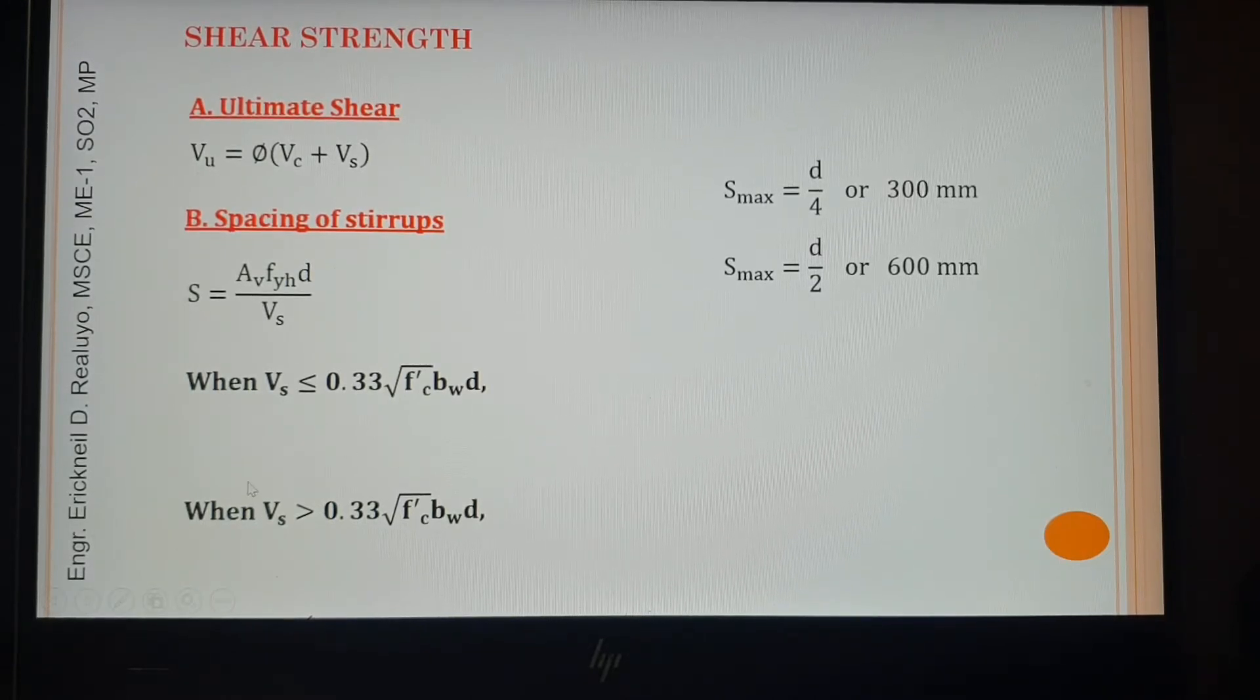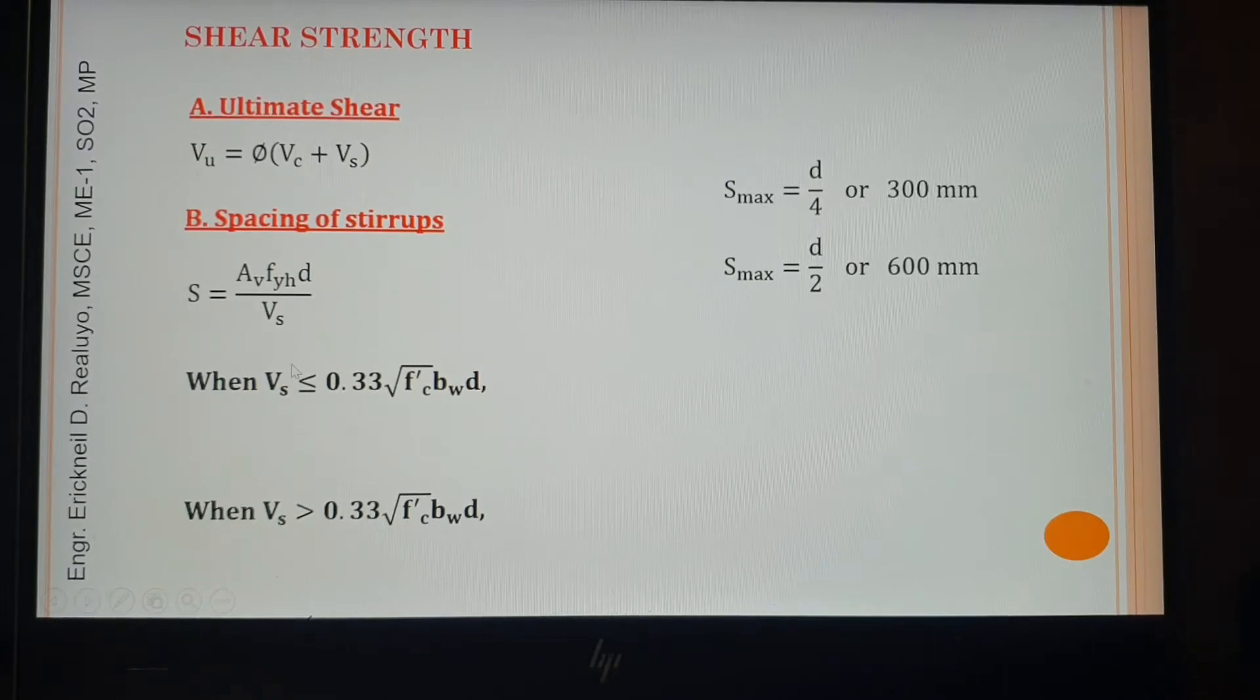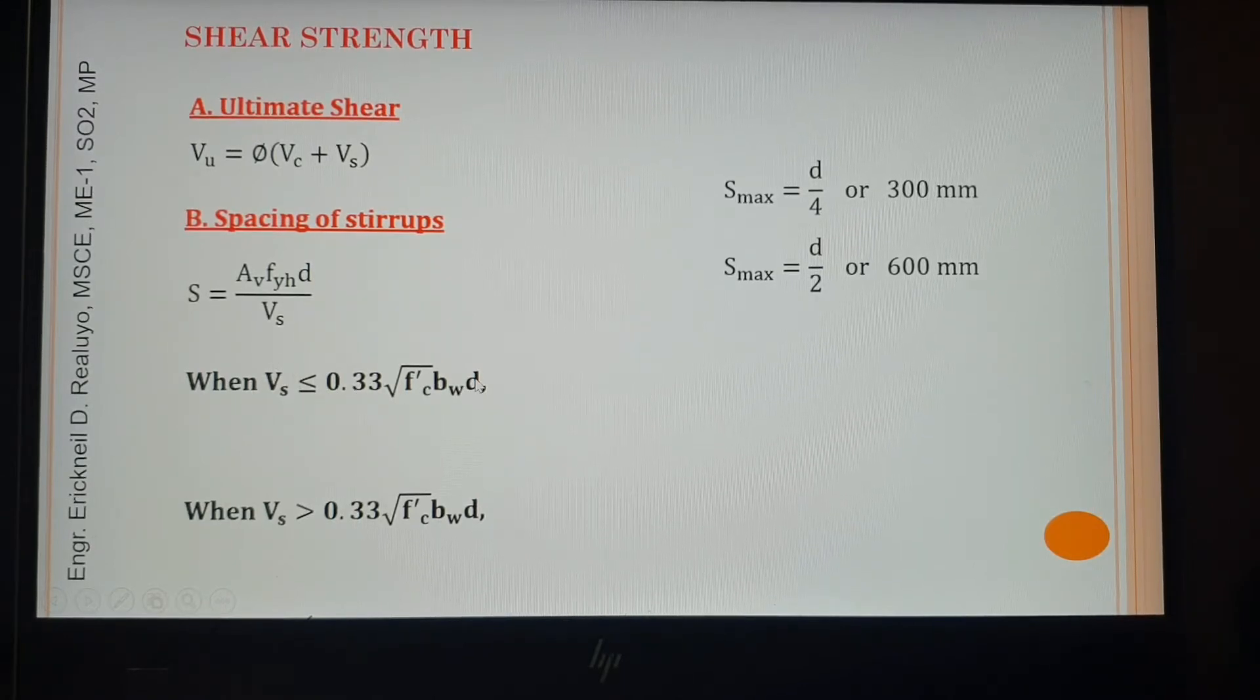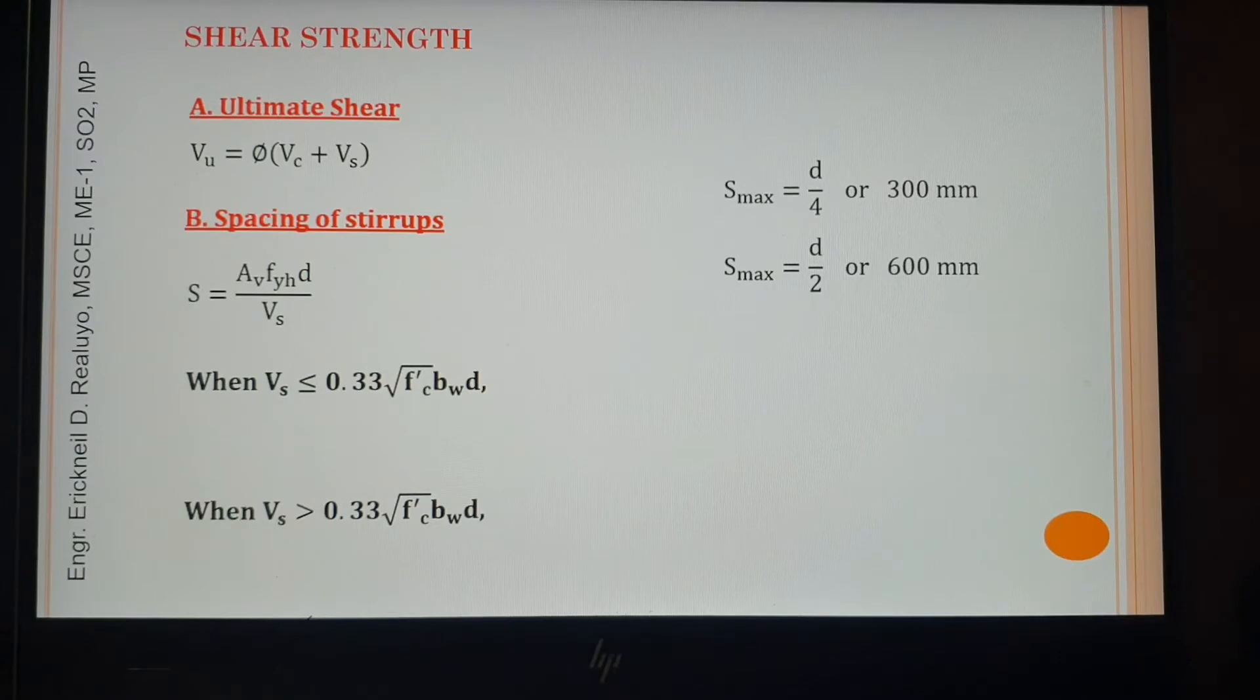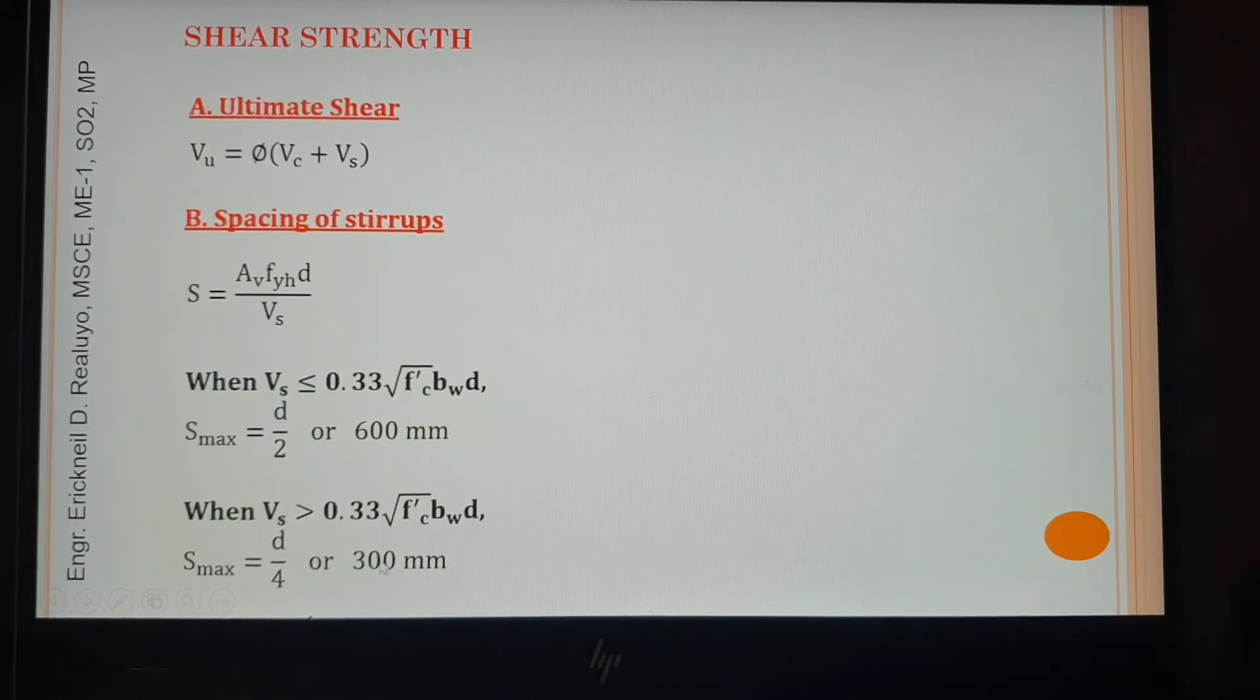Because when the spacing is small, these stirrups will be able to provide a large value of shear strength. Then in this case, since Vs, since the shear force to be carried is very small because it is less than 0.33 squared of F'c times b times d, then we can arrange the stirrups, we can lay them with large value of spacing. So here are the large values, then here are the small values.